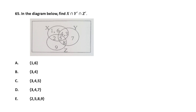Question 65: we want the intersection of X, Y complement, and Z complement. Y complement comprises elements outside set Y, and Z complement are elements outside Z. Intersecting with set X gives the result {1, 6}, which is option A.